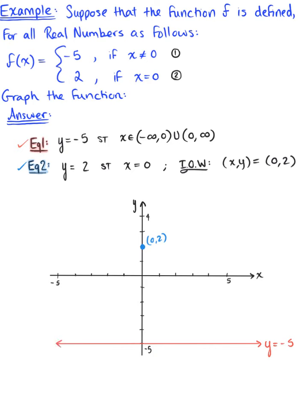But we want to be careful. We know there's a domain restriction here. This is for all x values except where x equals 0. So on our graph, we're going to remove that point and replace it with an open hole to indicate that x cannot equal 0. And there you have it, this is the graph of our piecewise function.